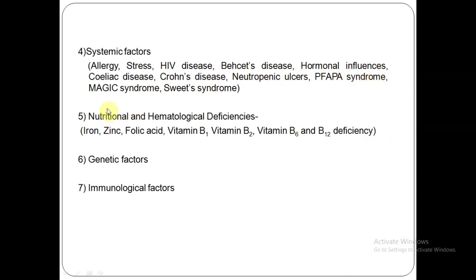These are syndromes associated with apthous ulcer formation. In Behcet's disease, you have apthous ulcer formation along with uveitis in the eyes and genital ulcers — it is immune mediated. PFAPA syndrome stands for periodic fever, apthous stomatitis, pharyngitis, and adenitis — you can have apthous ulcers along with all these other conditions.